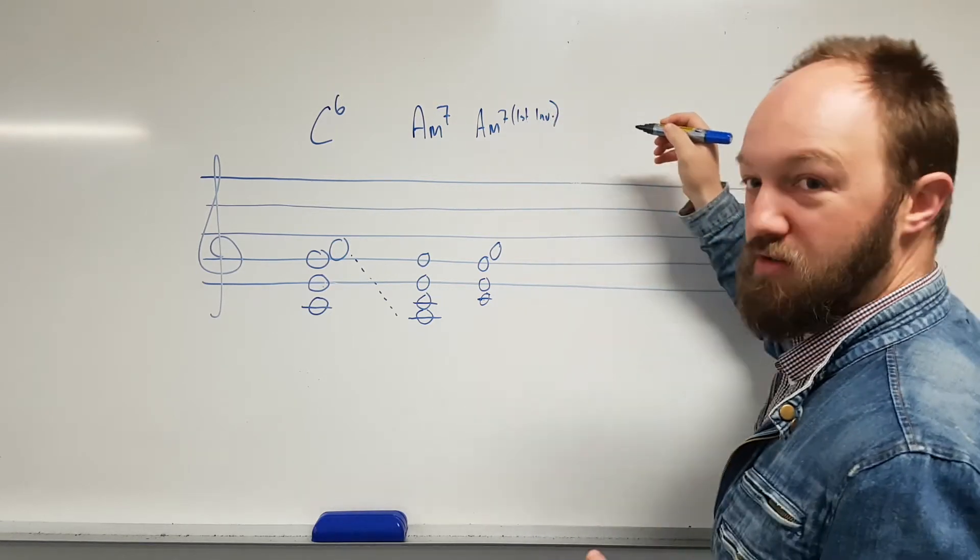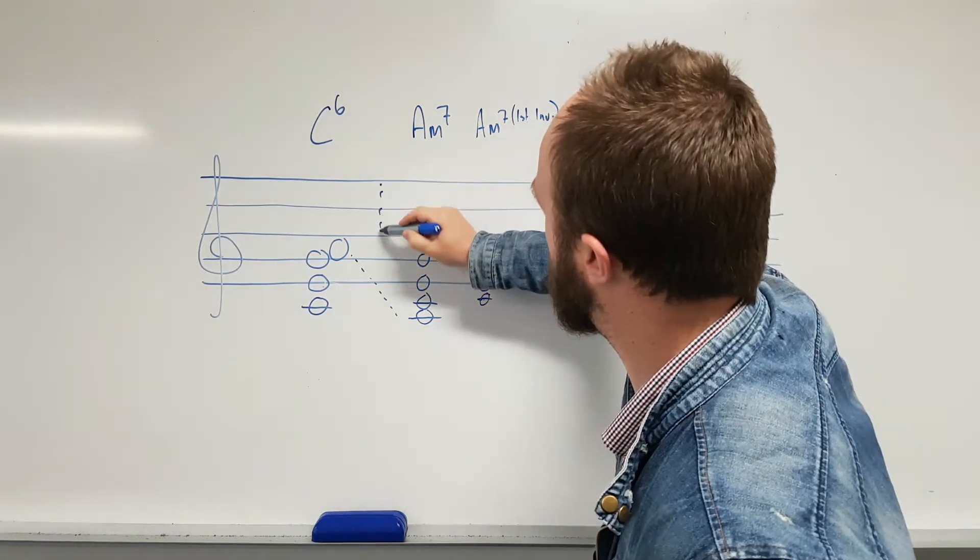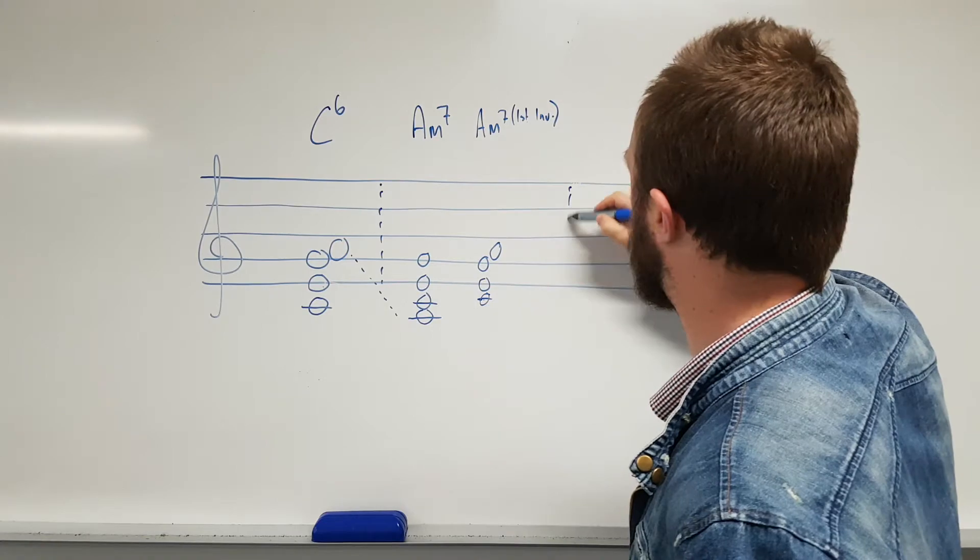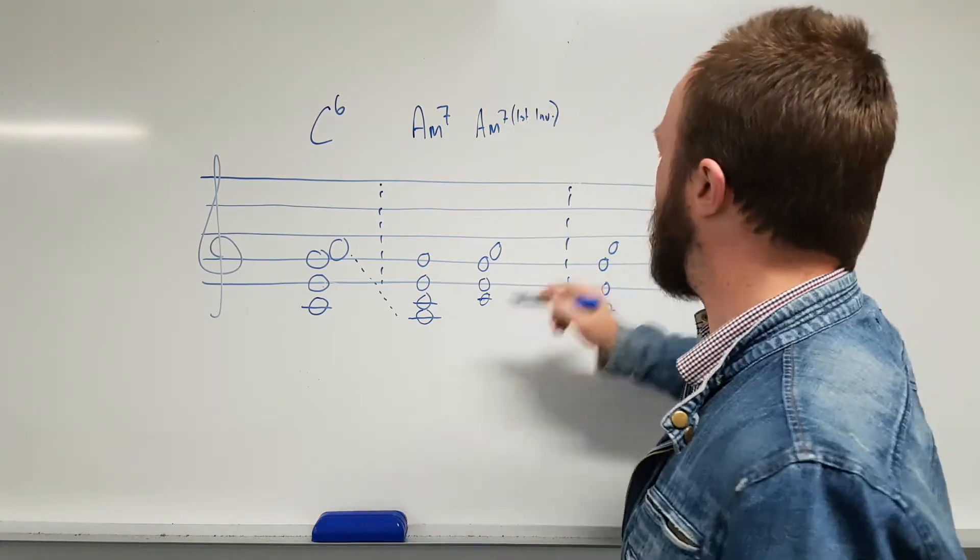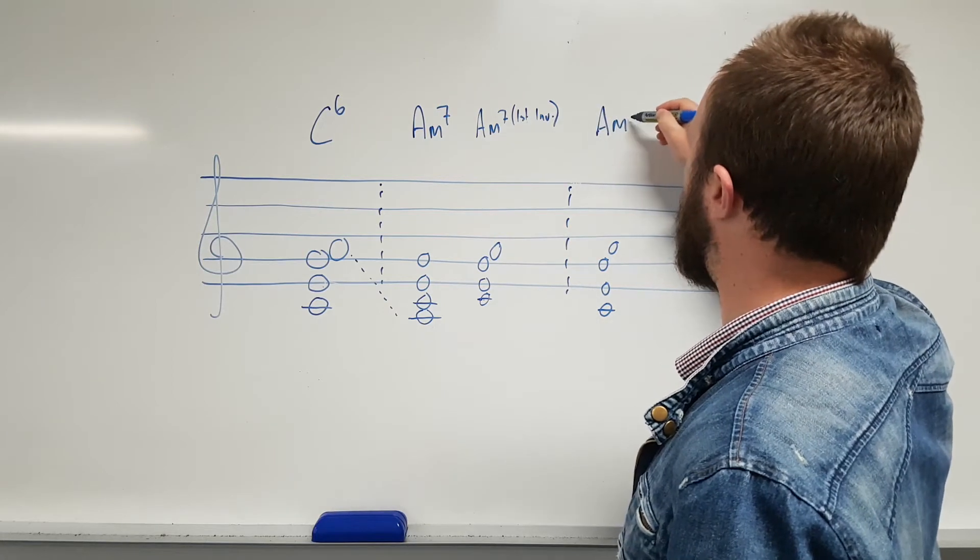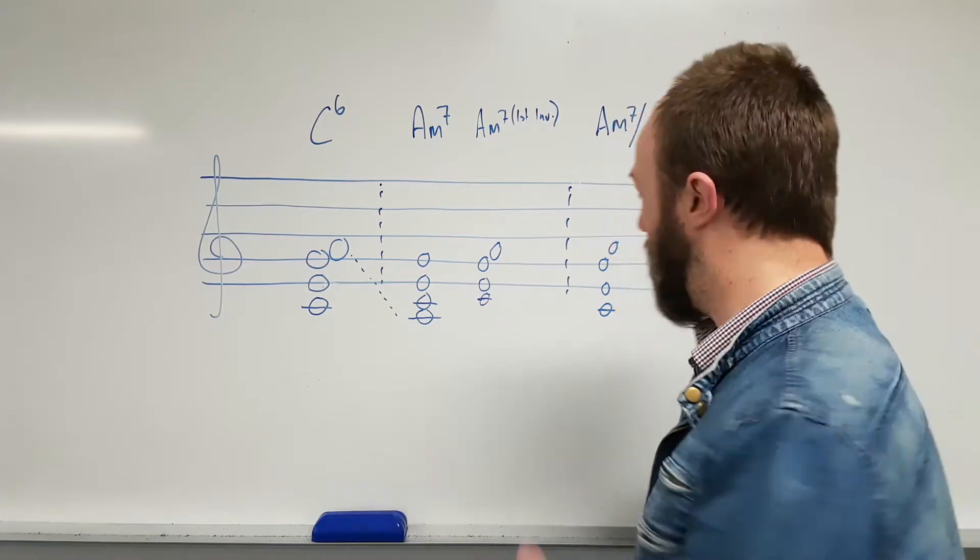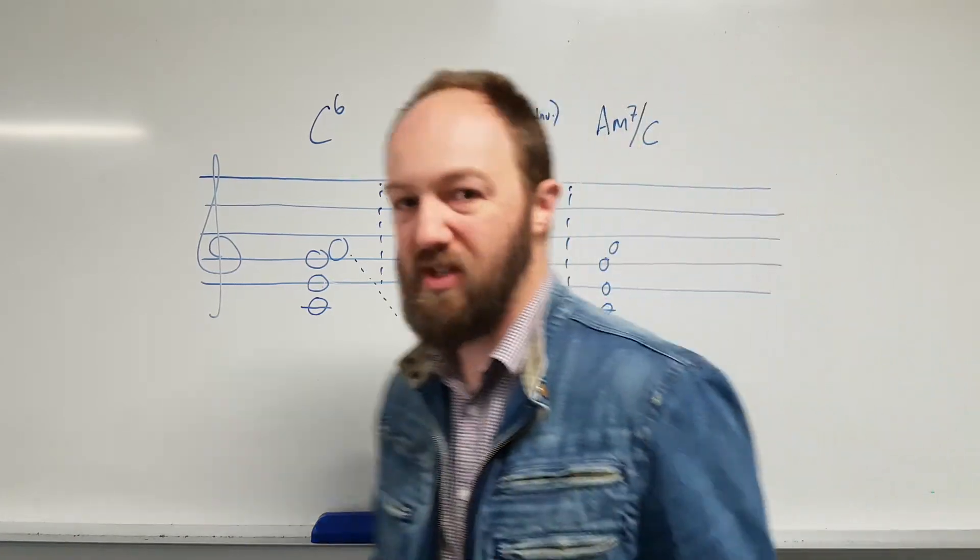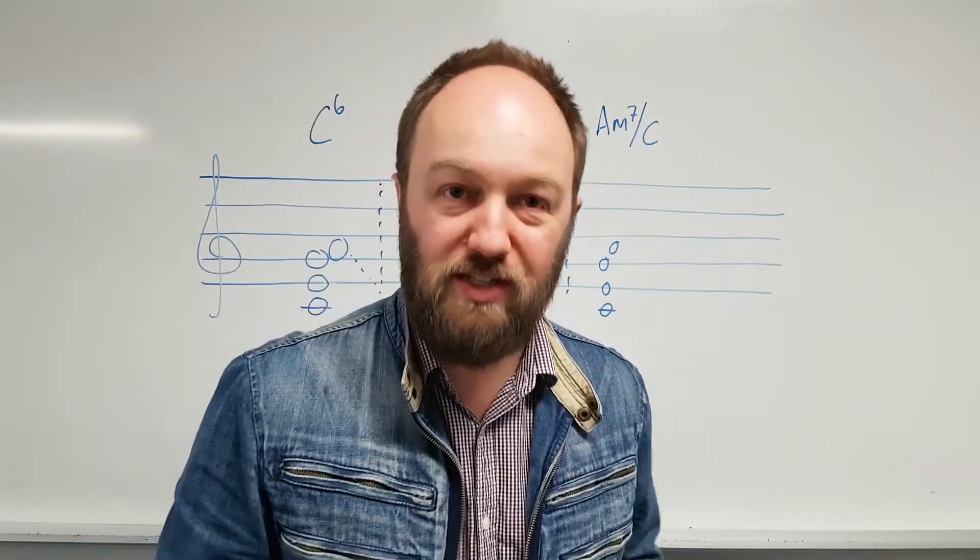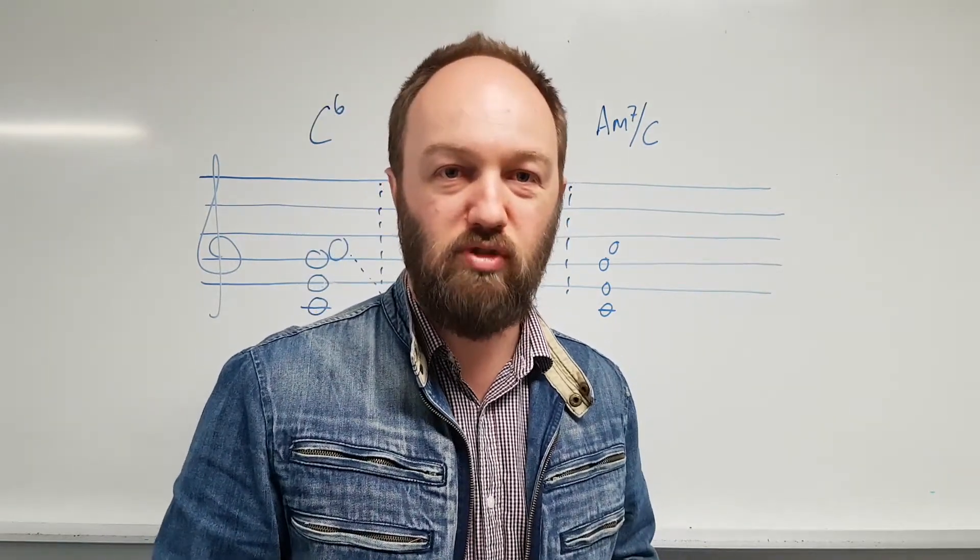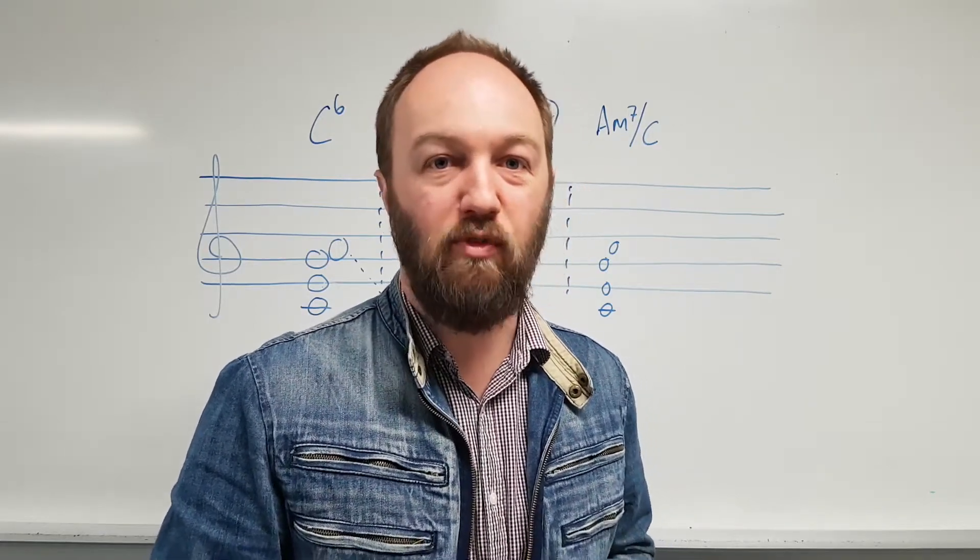We can also write that, potentially, bracket these off for a minute. We could also see that chord written, if this was the harmony, we might see this as an A minor seven slash C, because the C is the lowest note. But as we've said before, it really depends on the context of the chord, which will help you find out the best name for it.